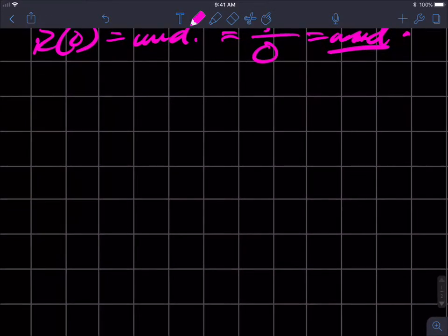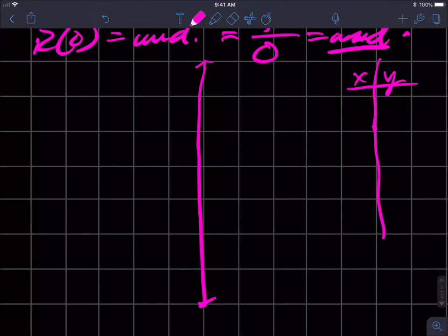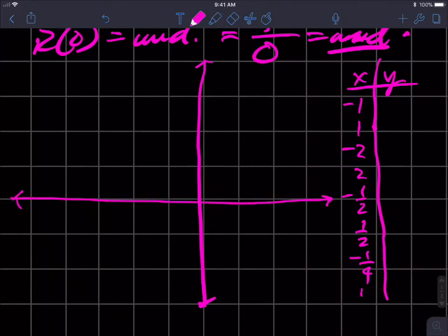If I were to plot a bunch of values—I'm not going to because it's too long—if I put in negative one, one, negative two, two, negative one half, one half, negative one quarter, one quarter, etc., we would find for this function we would get the following.